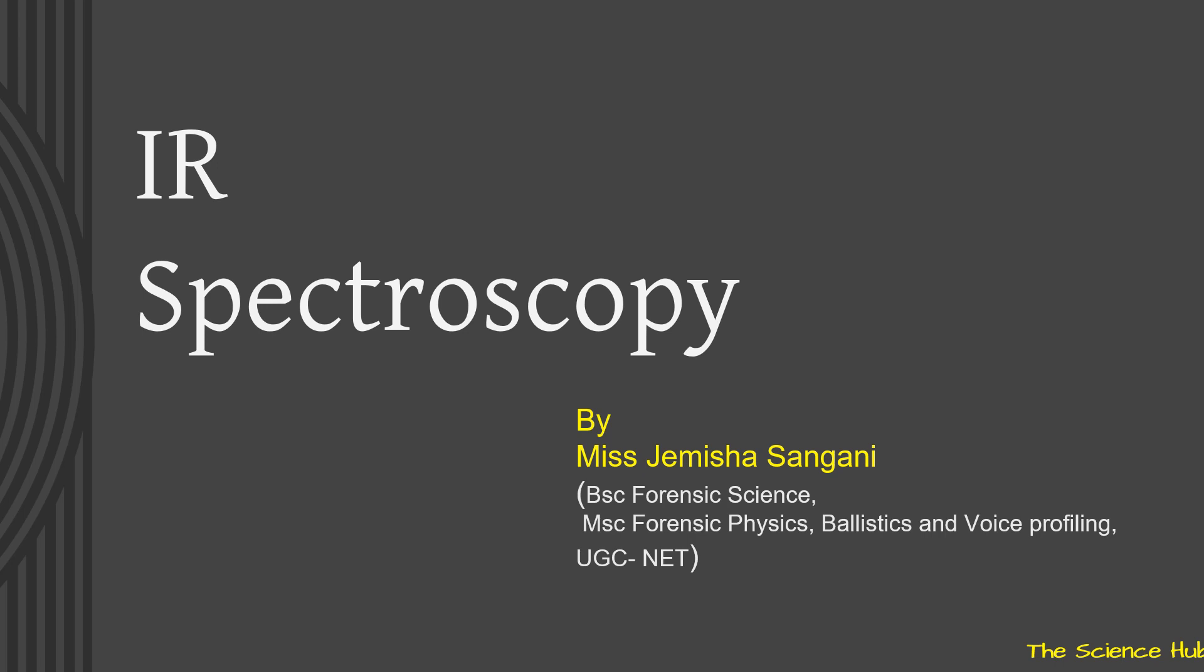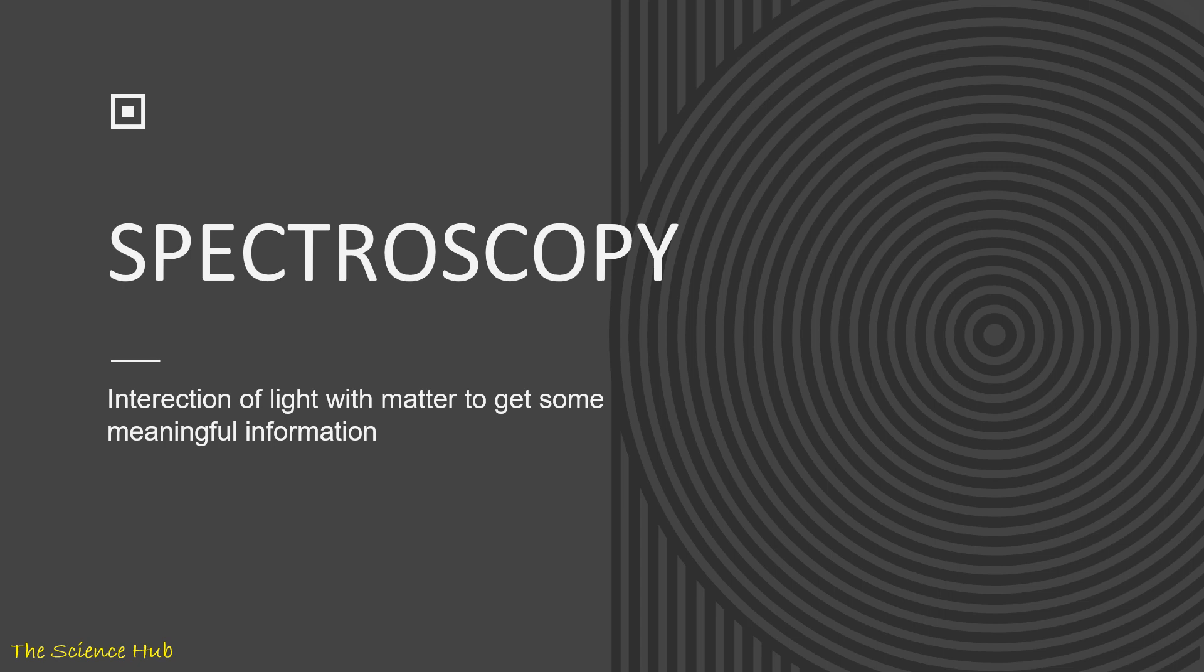Today we are going to discuss IR spectroscopy. Spectroscopy is an interaction of light with matter to get meaningful information, like what type of functional group is present in our sample and what is the chemical composition of a particular sample.